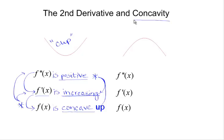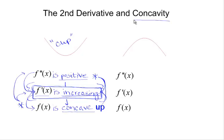The relationships between f, f prime, and f double prime are really important. We need to make sure we can go in any direction. Because f prime has a direct relationship with both f and f double prime, most of the time they will give us information about f prime — either graphically or analytically — and then ask us questions in both directions: about f and about f double prime.